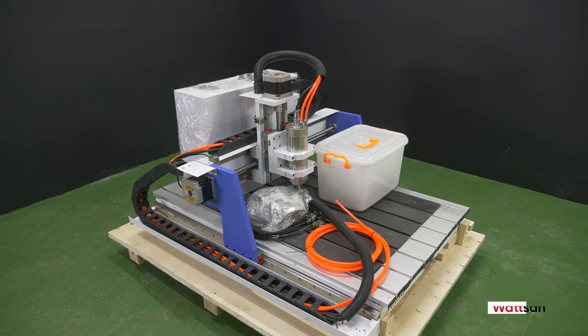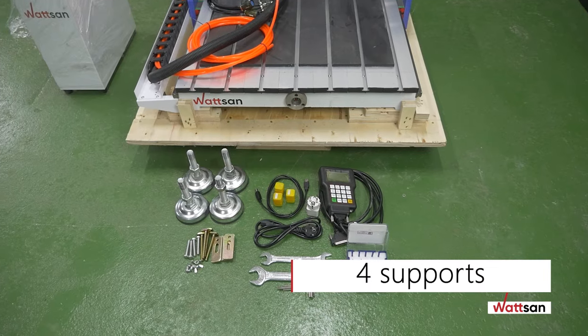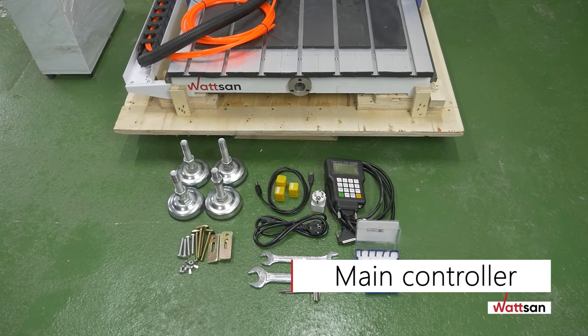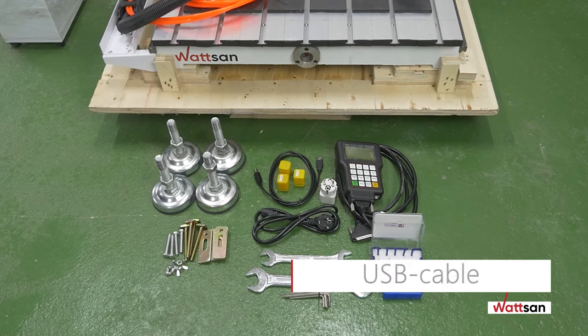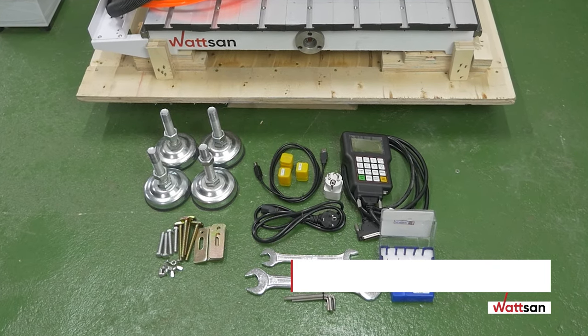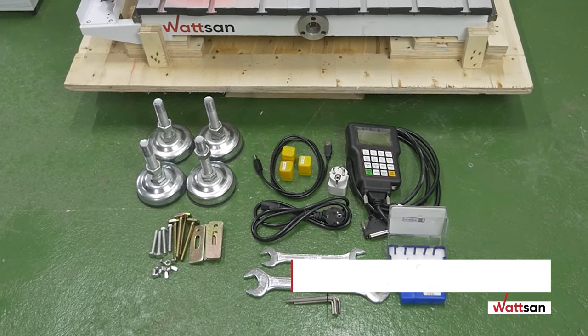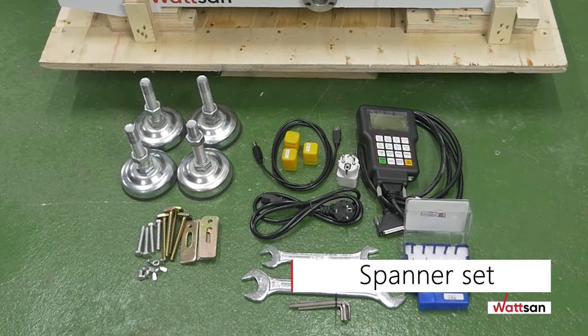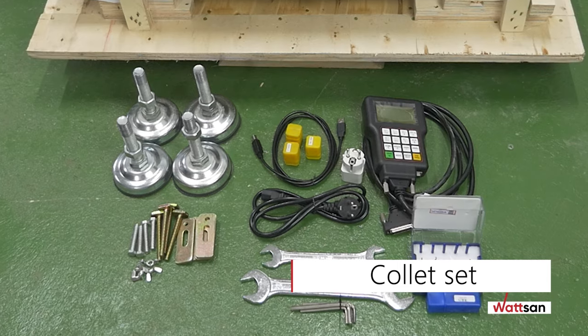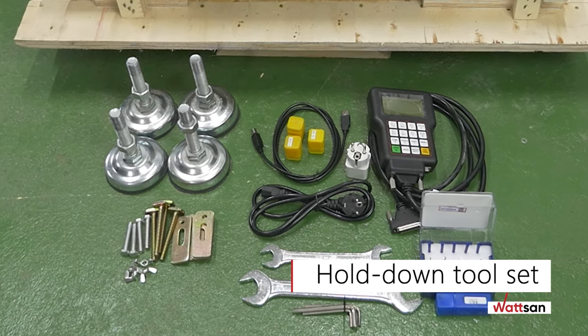The basic list of equipment includes 4 supports, a main controller, a controller connection cable, a USB cable, a set of cutters, a Euro plug adapter, a power cable, a spanner set, a collet set, and a hold down tool set.